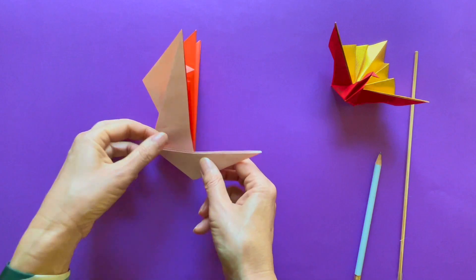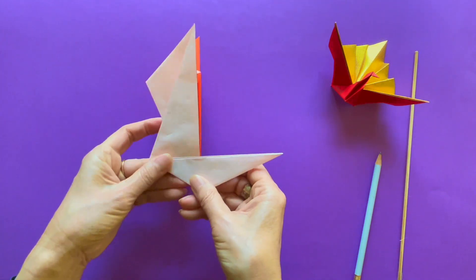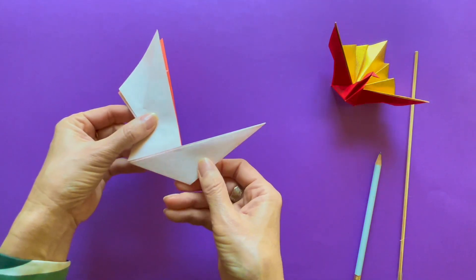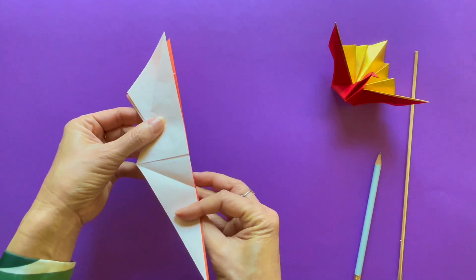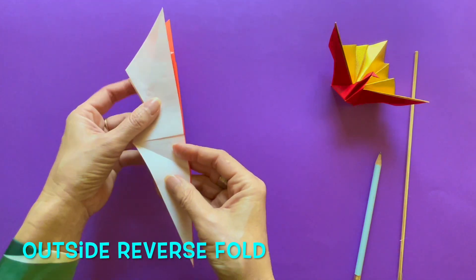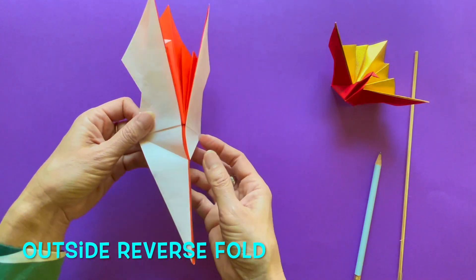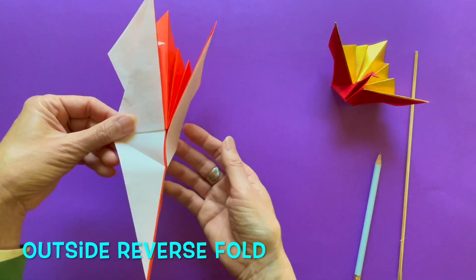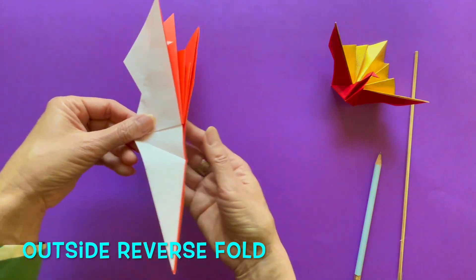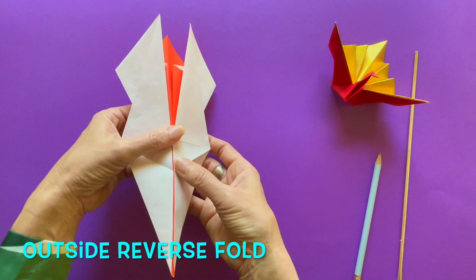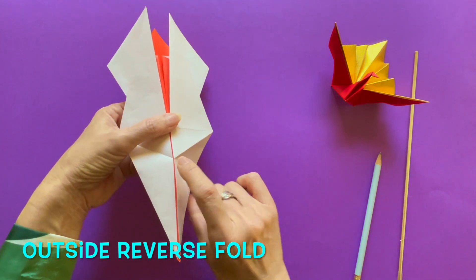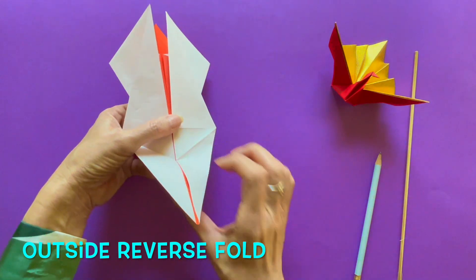Next step is using that crease you just made and make the outside reverse fold. If you know it already, go ahead. But if you haven't heard of this, let me do step by step with you. First, bring the back flap open. And find the V crease in the middle.